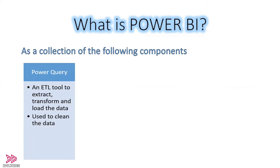The first component is Power Query. You can consider it as the ETL tool of Power BI, used for data pre-processing. Power Query extracts data from various sources, then transforms the data by cleaning it — removing unwanted rows or columns, duplicates, errors, etc. — and then loads the data to a suitable data source. Essentially, the Power Query component is used to clean and transform the data before analysis.